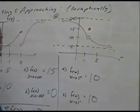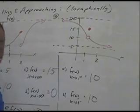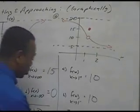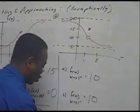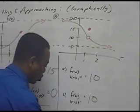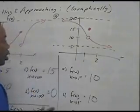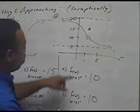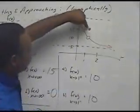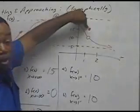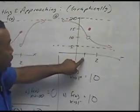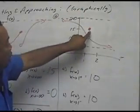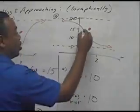Now for the evaluation at x equals 1: the value is the filled-in circle right here, so the value of f(1) is this spot which points to 15.